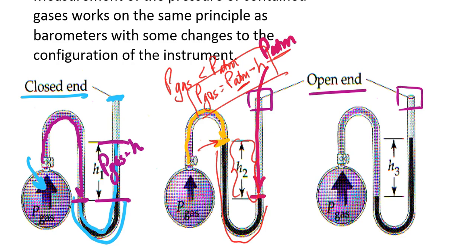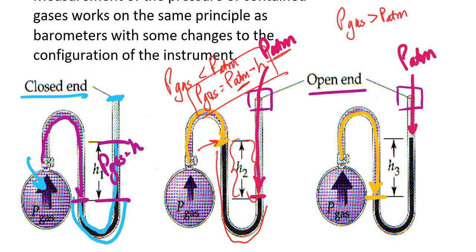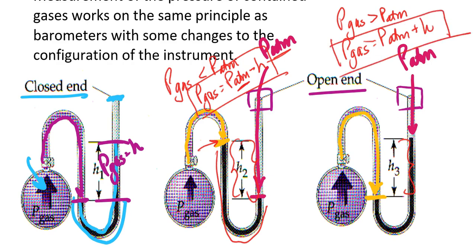Looking at the diagram on the right, we have the opposite scenario. Here, the gas pressure is actually greater than the atmospheric pressure — the atmosphere is not able to push the mercury down below the level where the gas meets the mercury. In this case, to calculate the pressure of the gas, I need to add to the atmospheric pressure. The amount I add equals the height differential between the two sides of the U-shaped tube. So I would add the height differential to the atmospheric pressure to get the gas pressure.